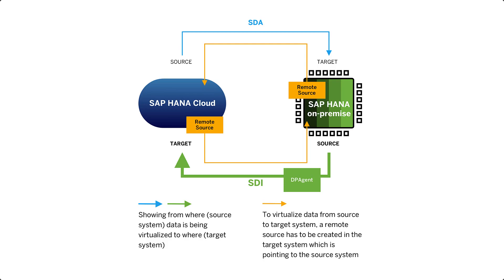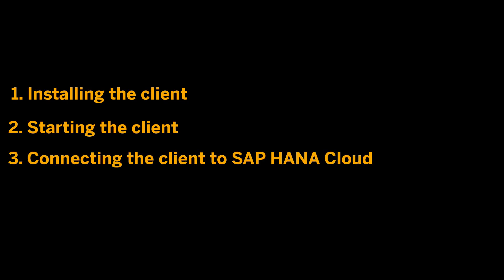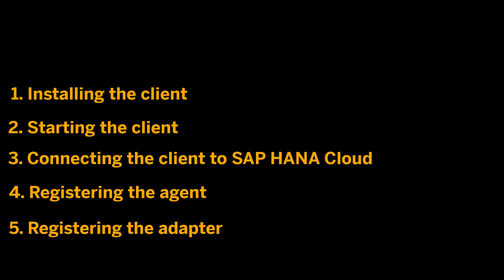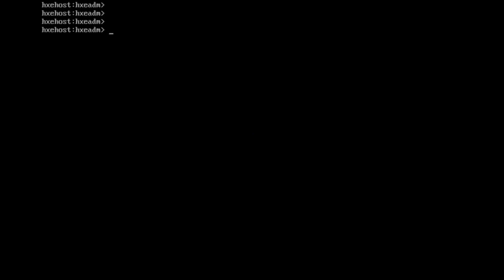In this video, you will see all the steps needed, which include: 1) installing the client, 2) starting the client, 3) connecting the client to the SAP HANA Cloud database, 4) registering the agent, and 5) registering the adapter. You can download the DP agent from the SAP Development Tools website. You can find the link in the description of this video. In this example, I am using SAP HANA Express Edition and a Linux system, and I will complete all the steps using the Command Line Interface Tool or CLI.